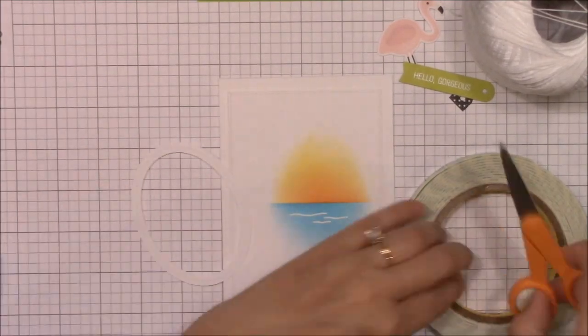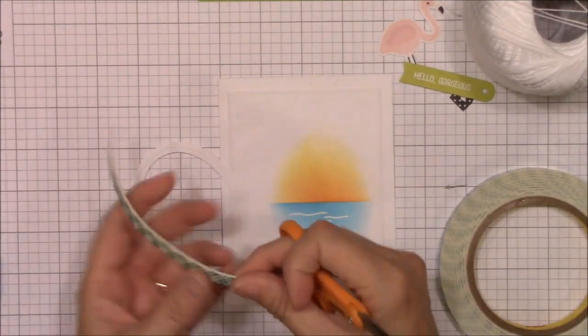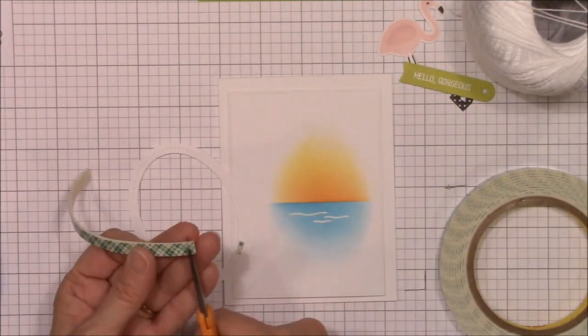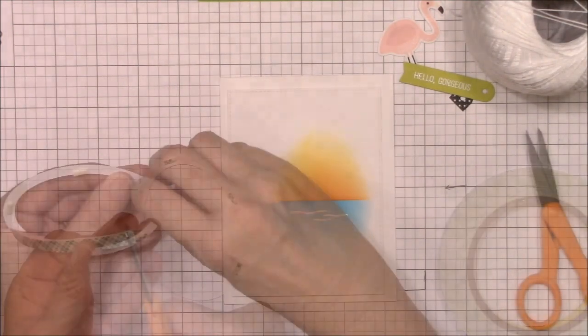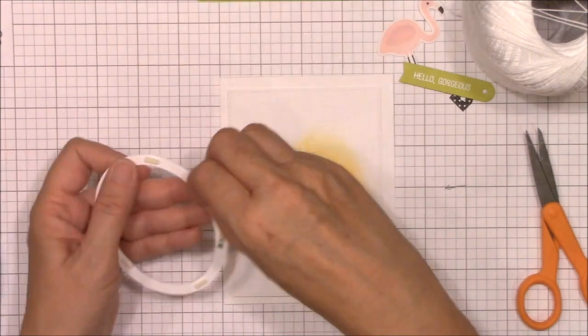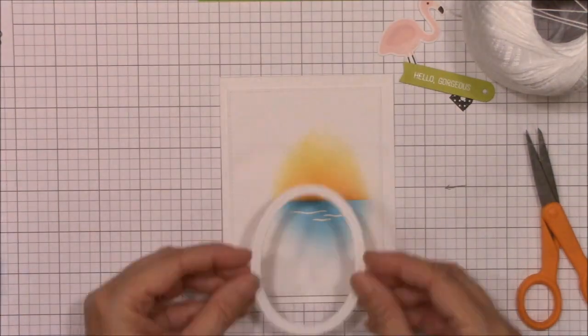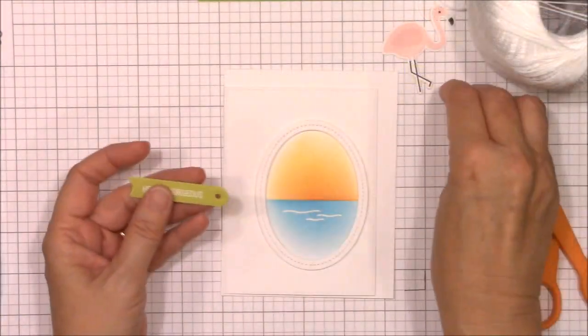Off camera, I die cut an oval from smooth white cardstock using the single stitch oval frame dynamics. I'm adding bits of foam tape to the back side of the oval and after I remove all of the release paper, I'm adhering it to the image panel in the area of my inked background.